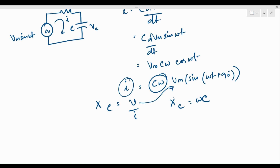We can now draw the phasor diagram for this RC circuit. The source voltage is shown, and the current through the capacitor leads the voltage by 90 degrees. Therefore IC·XC gives VC. Having established this, we can now go back and look at the full RLC series circuit and put all of these together.